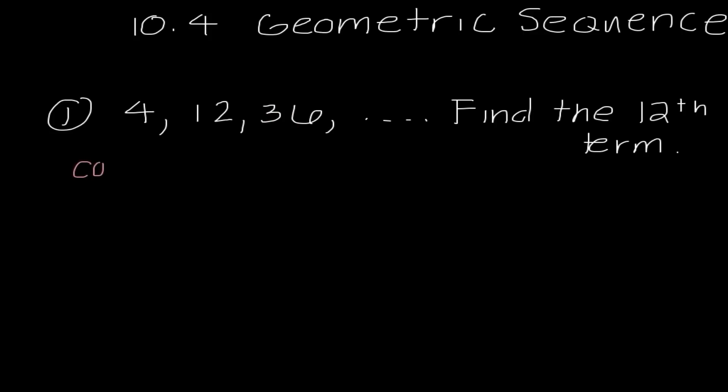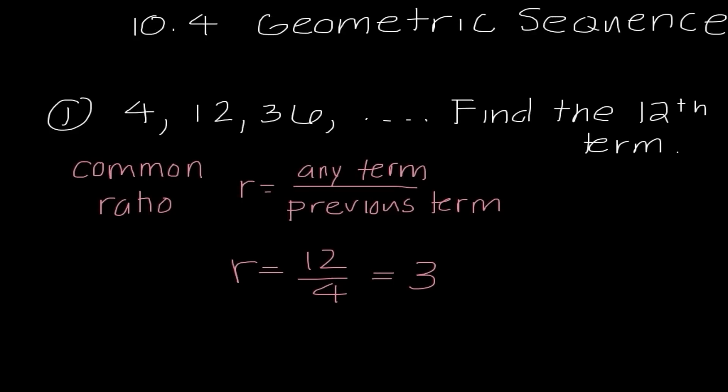And we call this our common ratio. The way that I find the common ratio, which we use the letter r to represent, is any term divided by the previous term. So in this particular case, I could go ahead and say the ratio is 12 divided by 4, which is 3. And if I look at this, 4 times 3 is 12, 12 times 3 is 36, so it does seem like that is true. Now if I wanted to, I could keep doing 36 times 3, that number times 3, and so forth, but there must be a quicker way.